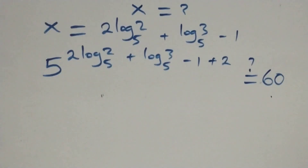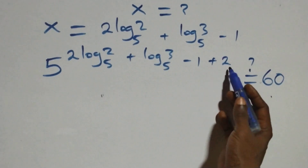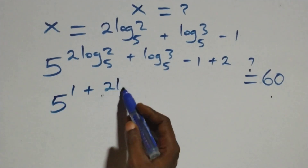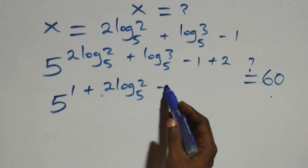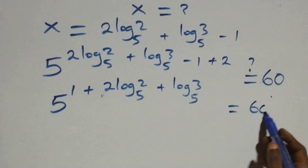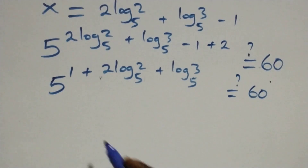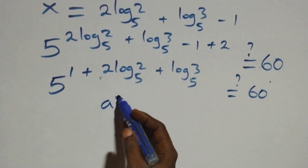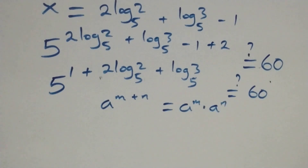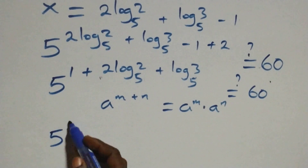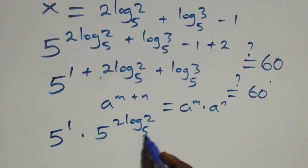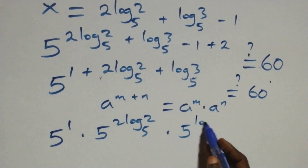From what we have, minus 1 plus 2 is the same as 2 minus 1, which equals 1. So we can say this is 5 raised to power 1, plus 2 log₅2 plus log₅3. We separate this using the rule a raised to power m plus n equals a^m times a^n. We have 5 raised to power 1, times 5 raised to power 2 log₅2, times 5 raised to power log₅3.